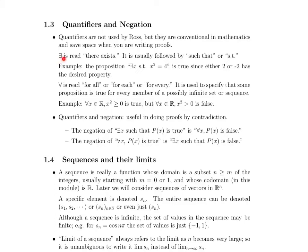This backwards E as we've discussed is there exists. It's usually followed by such that or s.t. There exists some blank such that. Here's an example. There exists an x such that x squared equals 4. It's true since either 2 or negative 2 has the desired property.